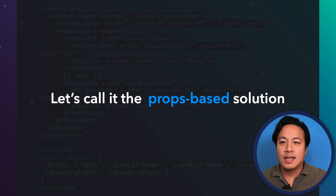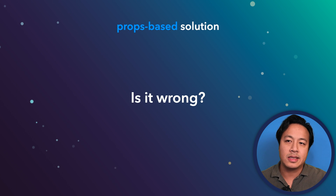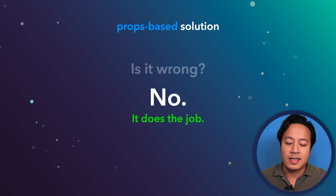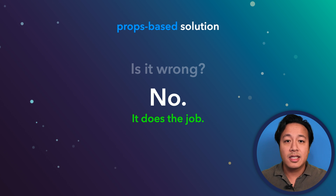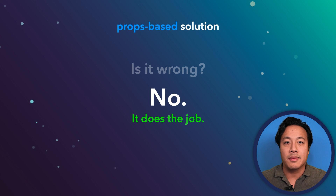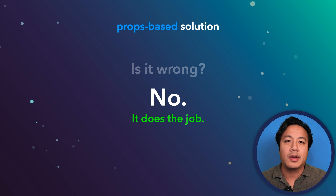Let's call this a prop-based solution. The question is: is it wrong? Even though I'm leading into a discussion about why the prop solution isn't quite so ideal, it's not that it's wrong — it actually isn't wrong at all, because it does the job. If you were to ship this code to production and it's working for users, product managers are happy, and it's looking the way the designers want — you did your job. It works.